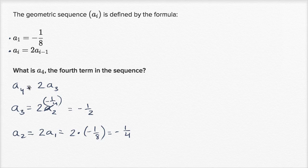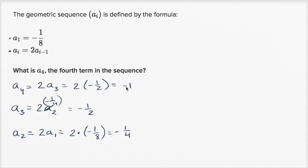So a₄ is two times a₃. A₃ is negative one half, so a₄ is two times negative one half, which equals negative one. That's one way to solve it.